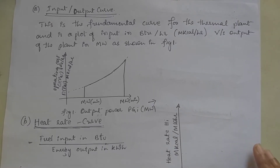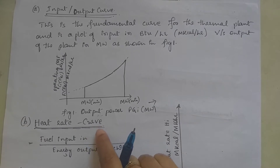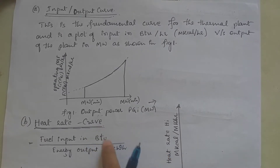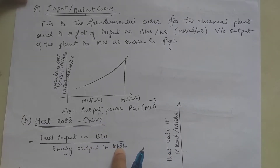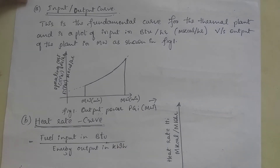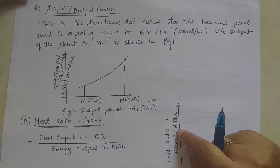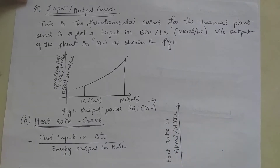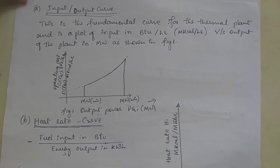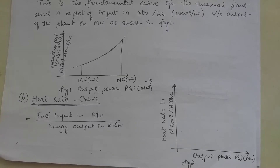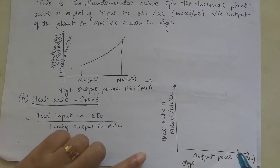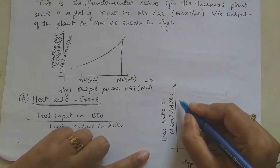The reciprocal of heat rate is called fuel efficiency. The heat rate curve is a plot of heat rate versus output in megawatt. The heat rate unit is m kilocalorie per megawatt hour, and the output power unit is megawatt. The plot of the heat rate curve is shown in the figure.